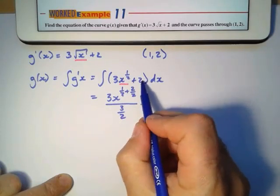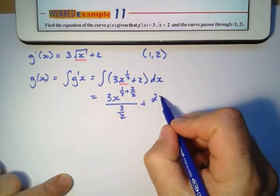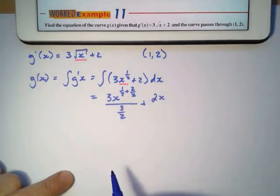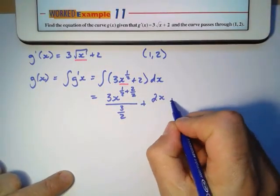Plus, if I have a constant value, I actually add an x. Of course, if I differentiate that, I should get 2. And then I'm also going to have a plus C.